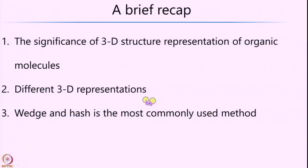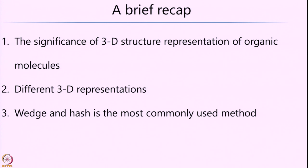In the last lecture, we first looked at the significance of 3-dimensional structural representation of organic molecules. We saw the story of Van't Hoff and how he came up with the brilliant idea of 3-dimensional arrangement of organic molecules, which was consequently proved by experiments. We also looked at different ways of representing organic molecules in 3D using wedge-hash projection, Newman projection, Sawhorse projection, and finally Fischer projections.